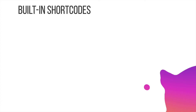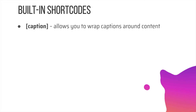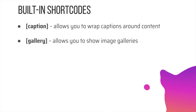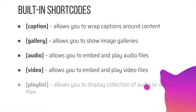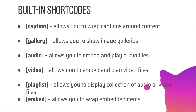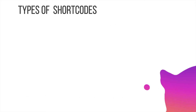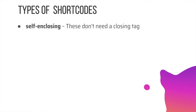There are built-in default WordPress core shortcodes: caption, which allows you to wrap captions around content; gallery, to show image galleries; audio, to embed and play audio files; video, for embedding and playing video files; and playlist and embed as well. Now there are two types of shortcodes. The first is self-closing, which does not need a closing tag — unlike in HTML where certain elements require closing tags.